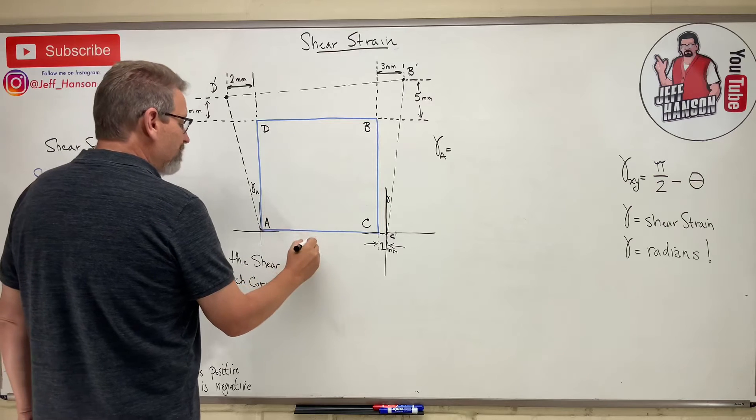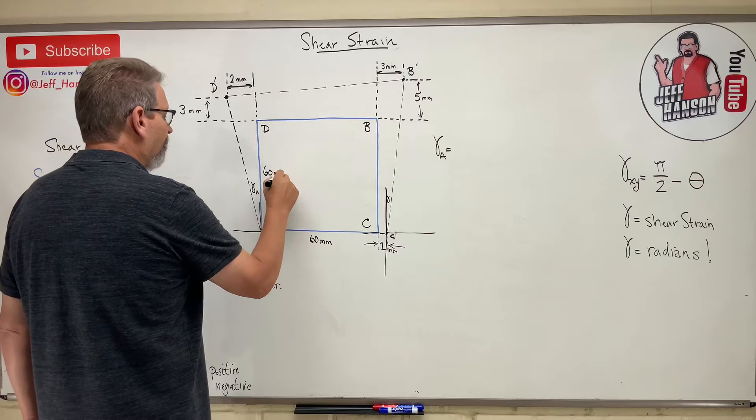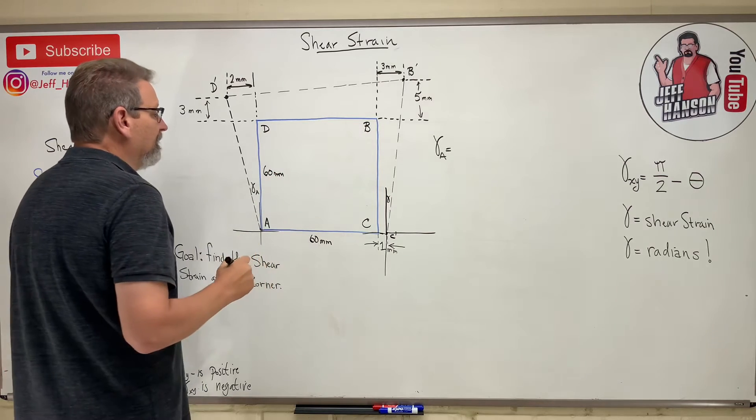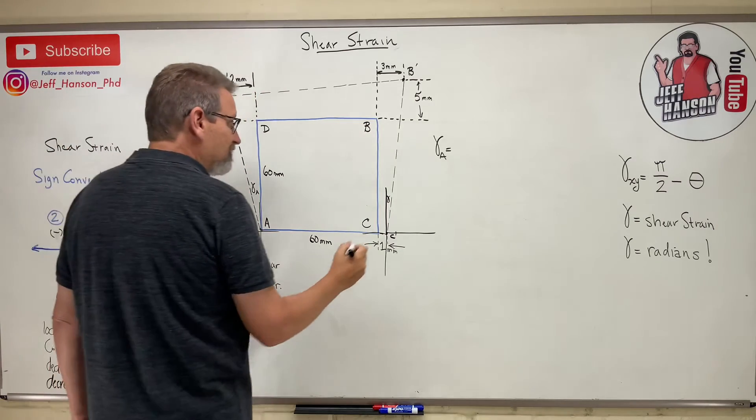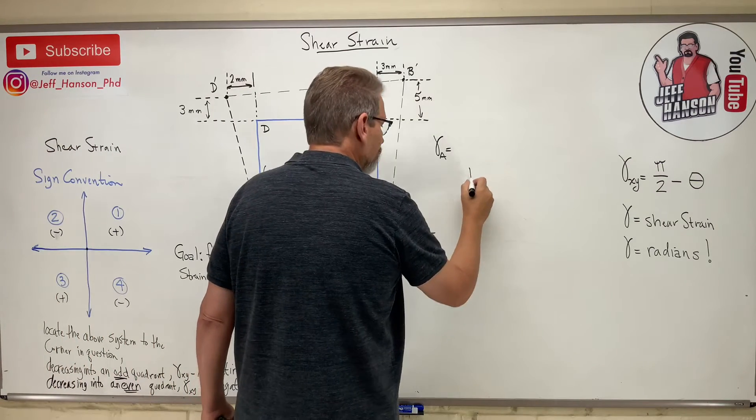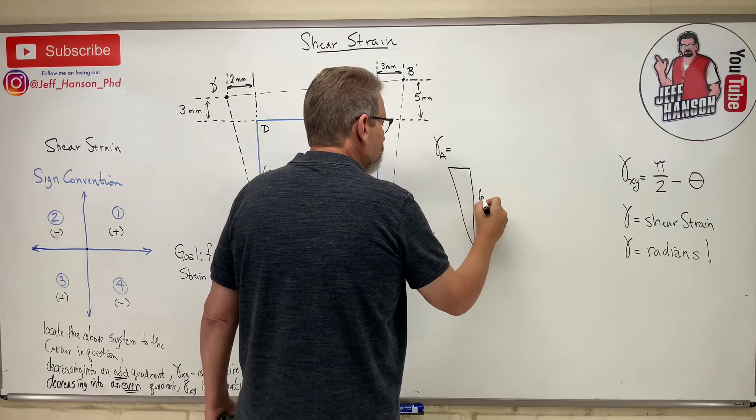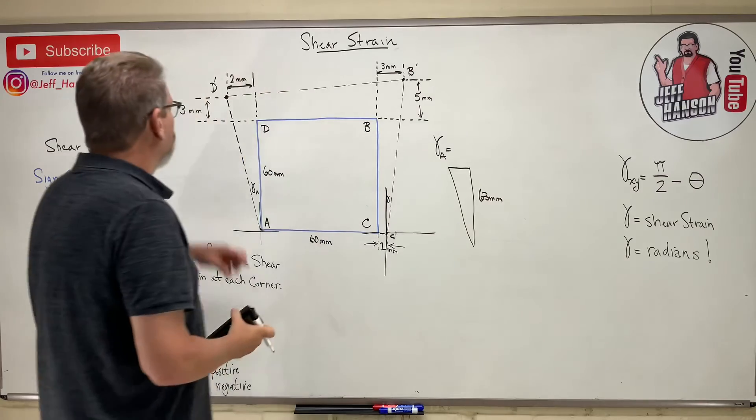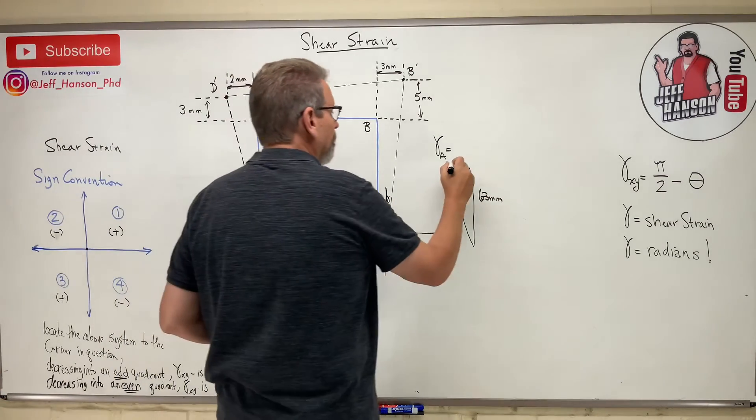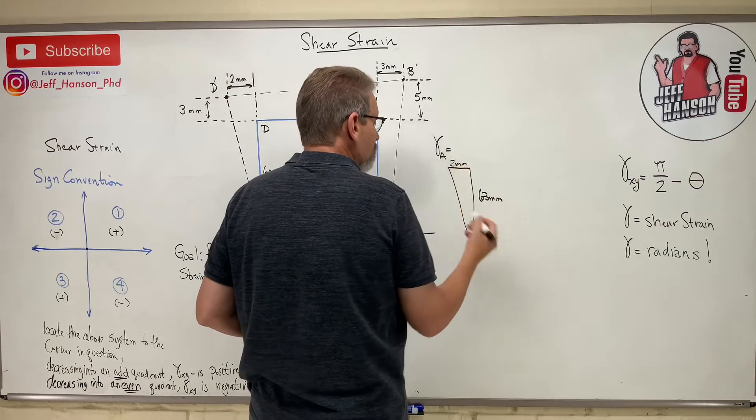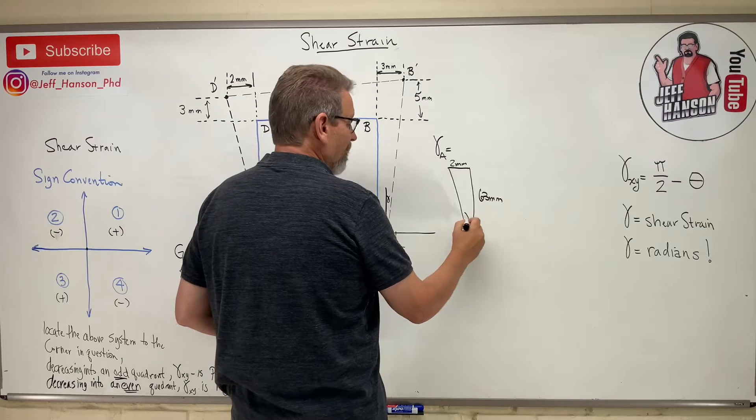Now this block originally was 60 millimeters by 60 millimeters. So what is this side here now? This side is 63, so I've got this triangle that looks like this now. It's very skinny, isn't it? It's 63 millimeters tall, and then this top part of the little triangle is 2 millimeters across there. So gamma for corner A is just this little angle right here.